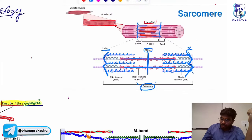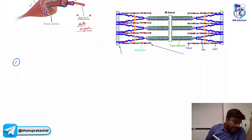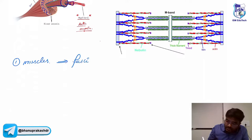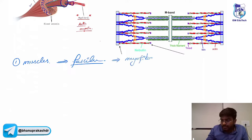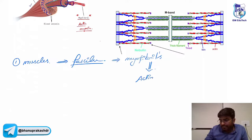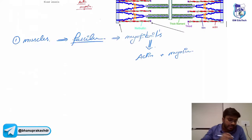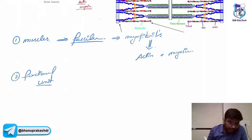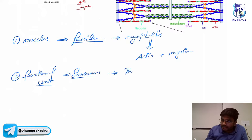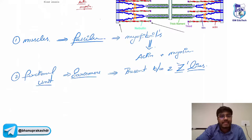Let's write the important points for your exam. Inside muscles, there are fascicles; inside a fascicle, there are myofibrils; the myofibrils are nothing but actin and myosin. The functional unit of a muscle is called the sarcomere, which is present between two Z lines.